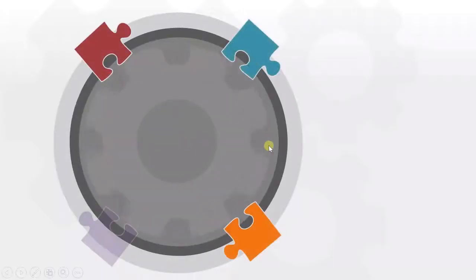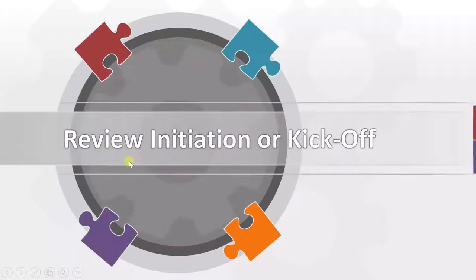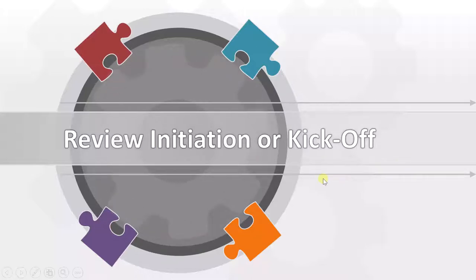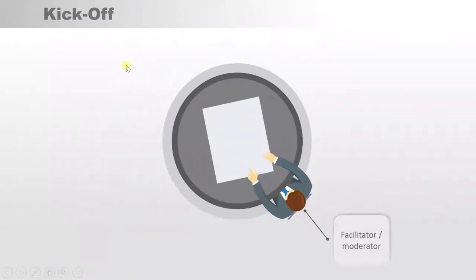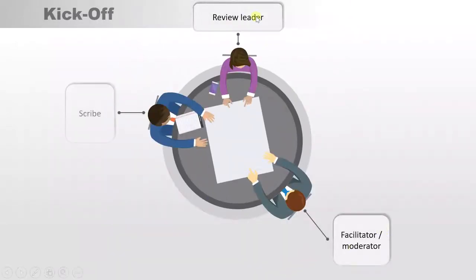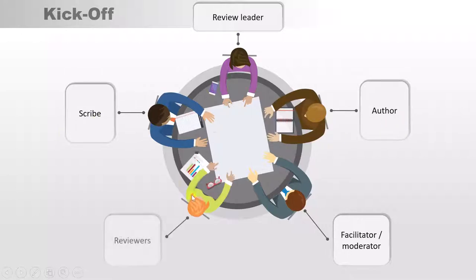In the last lecture we saw review planning, which was the first activity. In this lecture we are going to talk about review initiation or kickoff — the second activity in the complete review process. When we talk about the kickoff meeting, there are different people involved: facilitator, review leader, scribe, author, and reviewers. We will also study these roles in future videos.